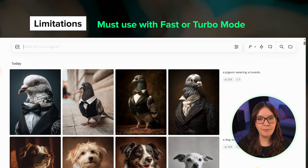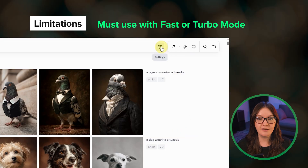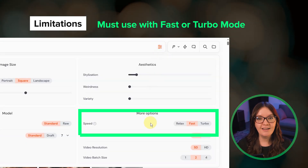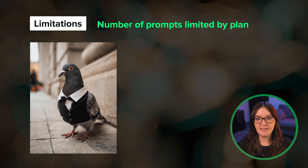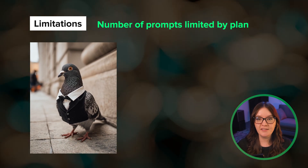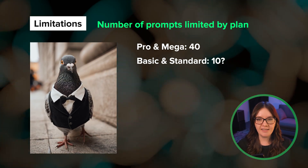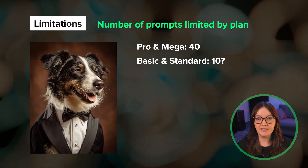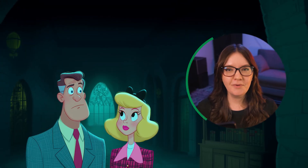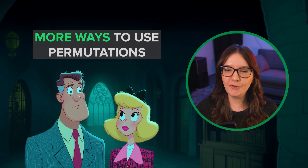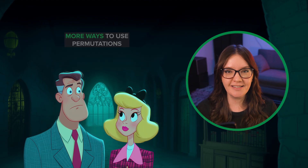First, they can only be used with fast or turbo mode, so be sure to select the right speed mode in your settings. Second, the number of prompts that you can submit at once is limited based on your subscription plan. For the pro and mega tiers the limit is 40, and then maybe 10 for the basic and standard plans. Now that we've covered the basics, let's go through some increasingly more complex ways to use permutations.